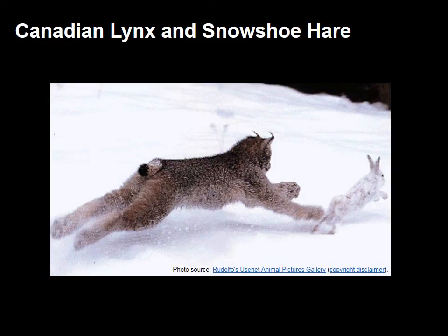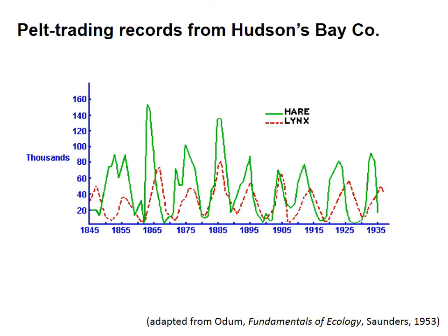A classic example in which this model is applied is the cyclic fluctuations observed in the Canadian lynx and snowshoe hare populations. In North American boreal forests, lynx prey upon hares. Lynx populations tend to rise and fall in response to hare populations. This trend was observed in the 1800s by fur trappers working for Hudson's Bay Company. Here is a chart made from old trading records which tracked population sizes for lynx and hare from 1845 to 1935.